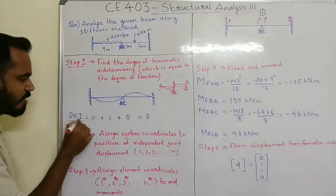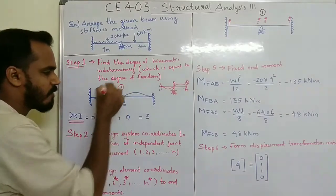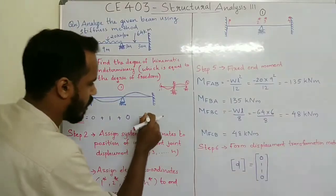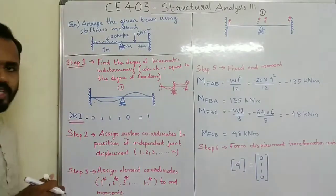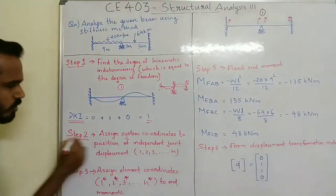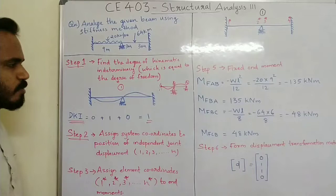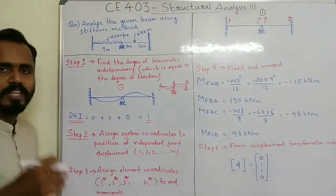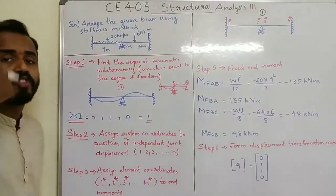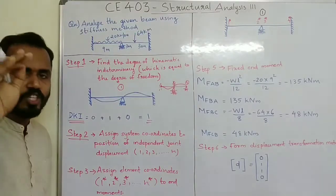The degree of kinematic indeterminacy is 1. Step 2 is to assign system coordinates to the positions of independent joint displacement. For each independent joint displacement, we will assign the system coordinates.